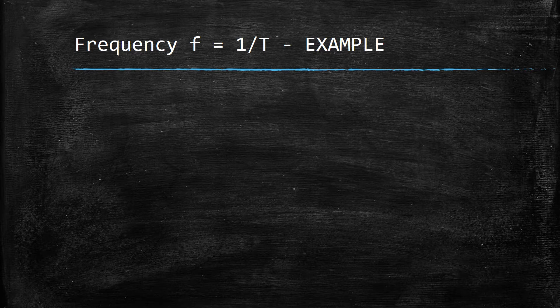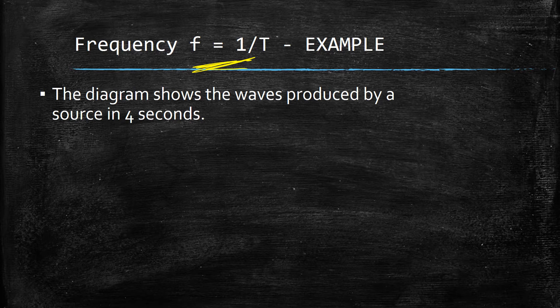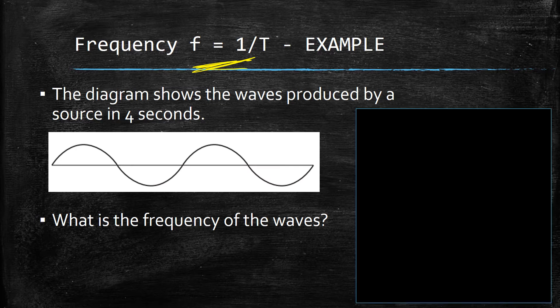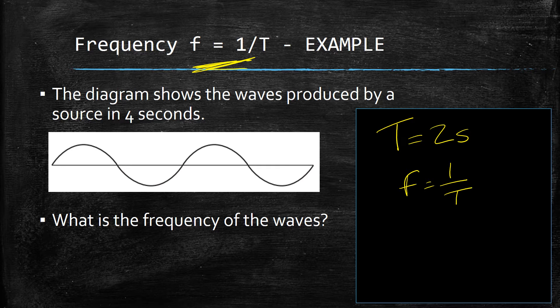The equation for period T equals one over F can be rearranged to F equals one over T in order to find the frequency of a wave. This equation doesn't appear on the relationship sheet, but it's useful to note. As with the previous examples, the diagram shows the waves produced by a source in four seconds. We're asked to find the frequency of the waves. In the previous question, we found that T was equal to two seconds. Using F is equal to one over T: F is equal to one over two, which is equal to 0.5 Hertz — exactly what we found earlier on.